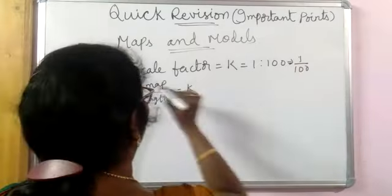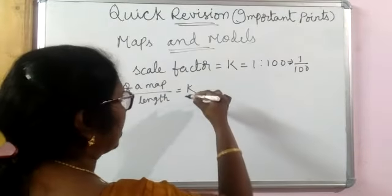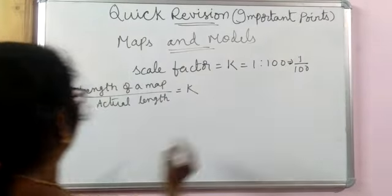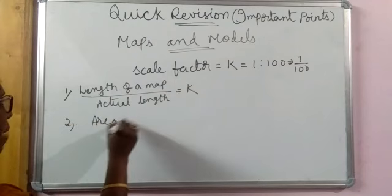Don't confuse - don't do actual length into K means what, 1 by 100. Map will be smaller, length will be - actual length will be greater. And area of the map...